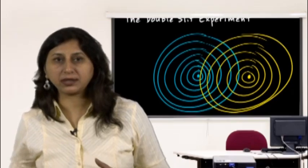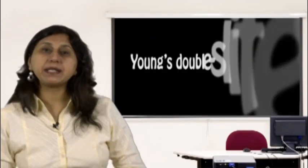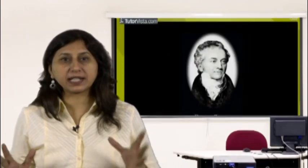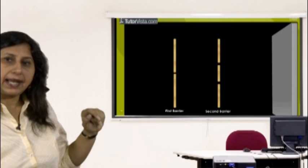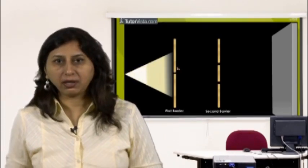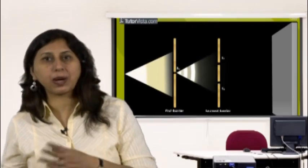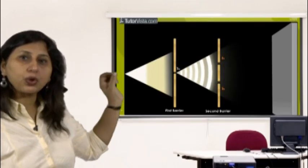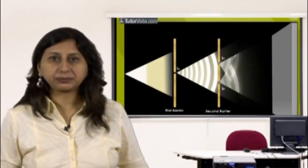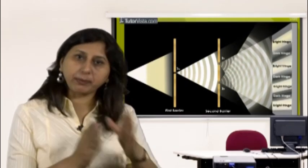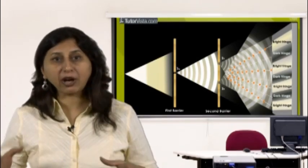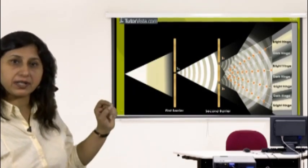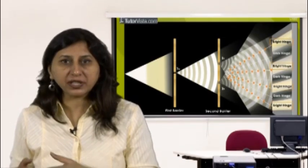Young's double slit experiment: Thomas Young first demonstrated interference from light waves with a double slit. Light passes through a single slit, then through slits S1 and S2, each acting as a source for circular expanding waves. Points of intersection of two crests — one from each slit — are points of constructive interference. Points where a crest from one slit meets a trough from the other are points of destructive interference, producing alternating bright and dark fringes on the screen.